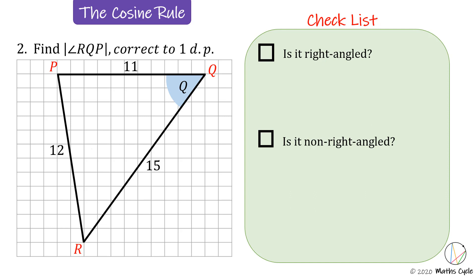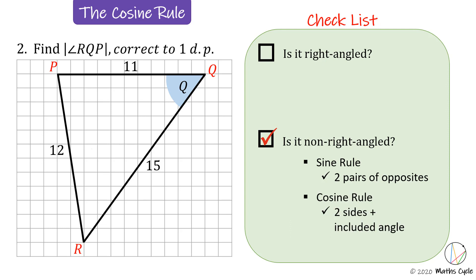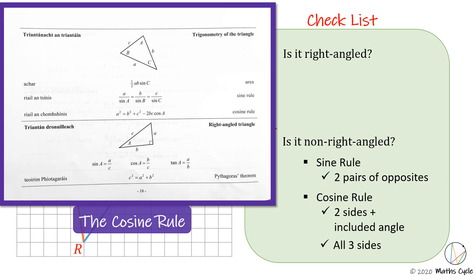Checking our checklist: is this a right-angle triangle? No. Is it a non-right-angle triangle? Yes. Do we have two pairs of opposites for the sine rule? No. Do we have two sides and the included angle for the cosine rule? We have two sides and the included angle but don't know the angle. So the last option: do we have all three sides to use the cosine rule? Yes we do — sides of length 11, 15, and 12 opposite the included angle.